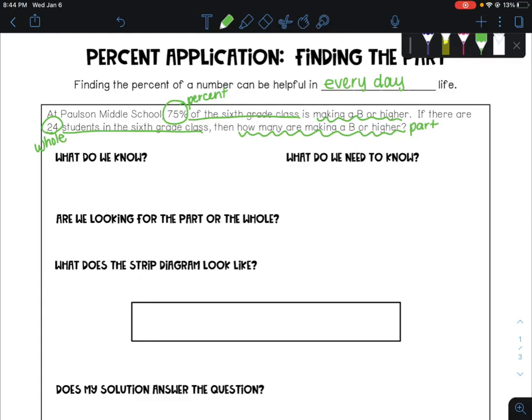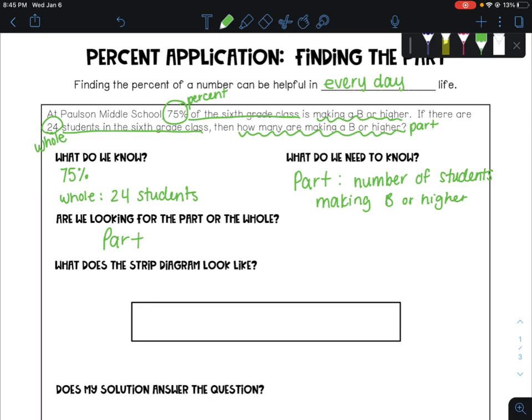What we know is the percent, and we know the whole value as well is 24 students. What do we need to know? We're trying to find the part, meaning the number of students making a B or higher. Are we looking for the part or the whole? We're looking for the part.